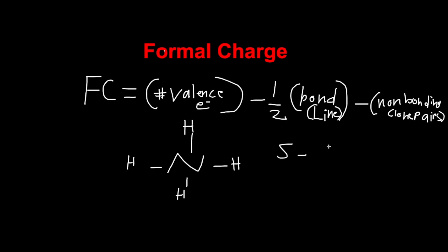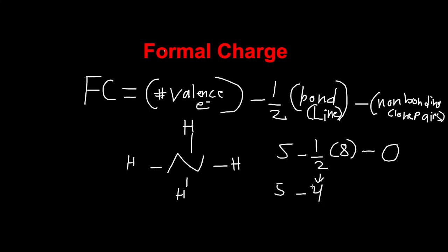Four bonds is eight electrons, but we have to take half of that: one-half times eight. Minus the non-bonding lone pairs — on nitrogen there are no lone pairs, so it's zero. Bringing these down: half of eight is four, so five minus four equals one, positive one. So nitrogen has a positive charge.